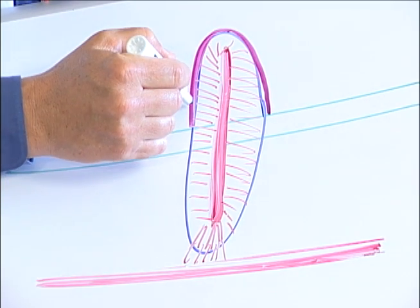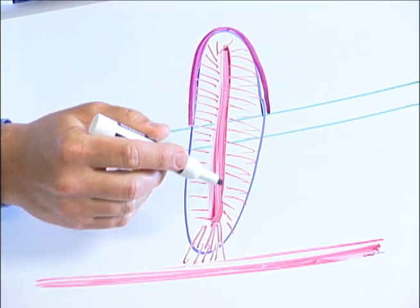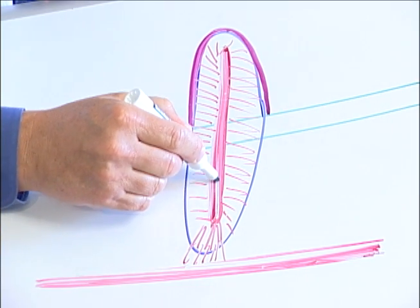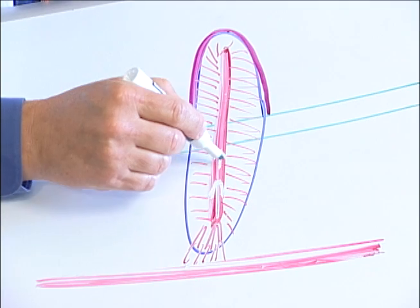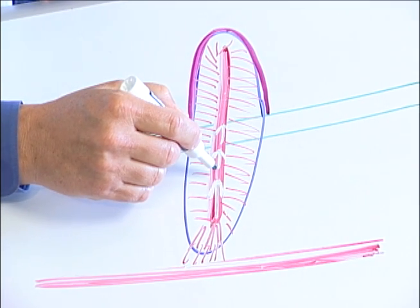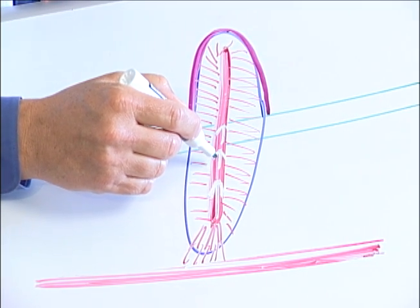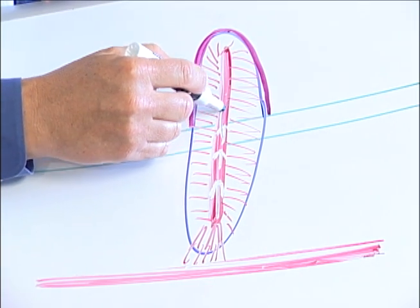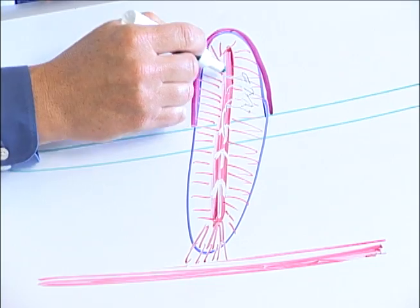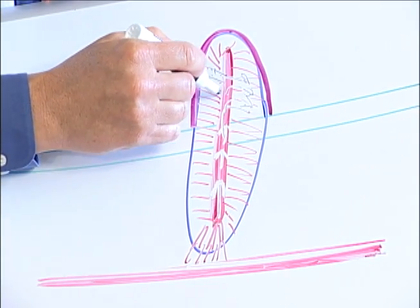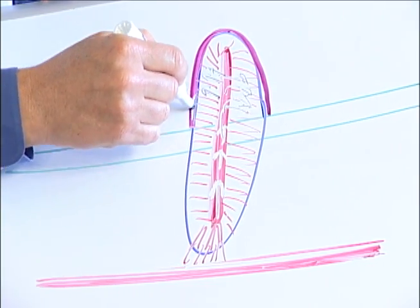When a tooth dies, the blood pressure within the tooth increases. Because the tooth is a rigid space that cannot swell like a leg or arm, blood is forced out into these tiny dentinal tubules, and what you will see is a tooth bruise.